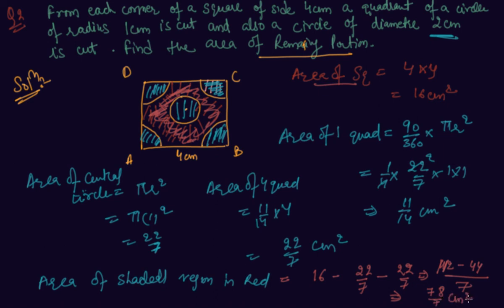So the area of the shaded region is 68/7 centimeters square. I hope you can now do these types of questions where any combination of plane figures is given. Please use the formulas for area of sector, area of segment, and arc length as required. If you are still facing any issue or query, please do comment in the comment section. I will be more than happy to help. Thank you students, happy learning.